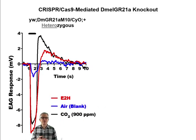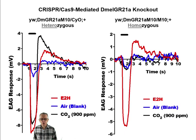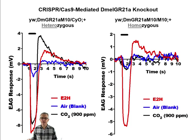Then we moved to the GR21A knockout flies. With the heterozygous flies, shown here on the left, we have a response to 2E-hexenal in red, a response to the air blank in blue, and a very robust response to 900 ppm CO2. When we do the homozygous knockout flies — no GR21A — there is a beautiful response to 2E-hexenal in red, a response to the air blank, but CO2 shows no difference. So we unambiguously show that GR21A — the ortholog of mosquito GR1 — is in fact a receptor itself in the fly, not merely a modulator.